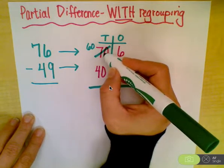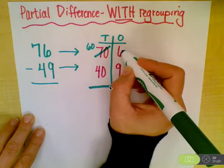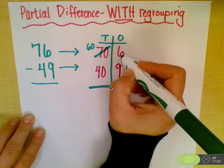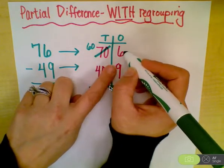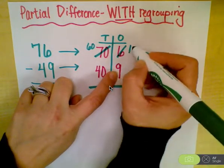Now that I borrowed from this side, I have to bring that over to my ones side. So if I already have 6, and I borrowed 10 from this place value, 6 plus 10 equals 16.